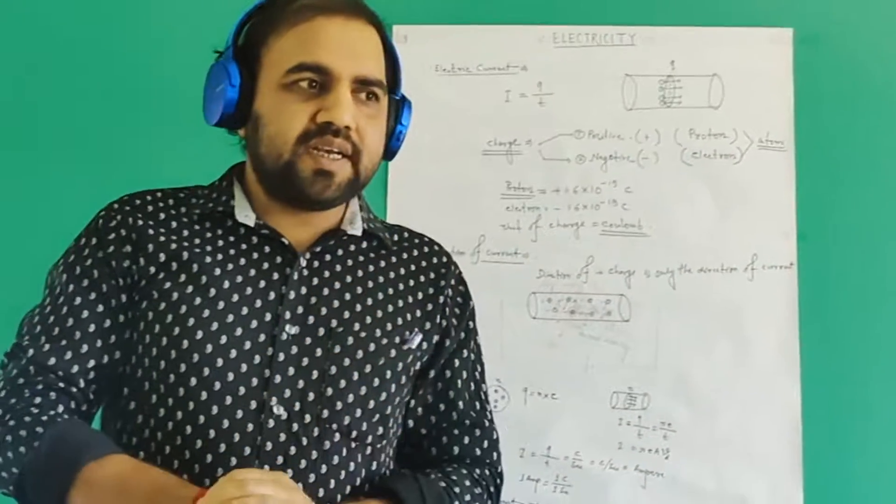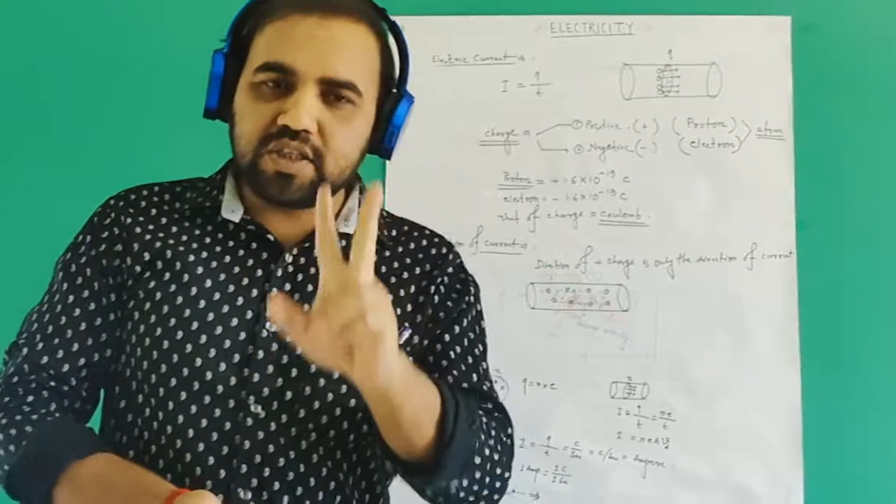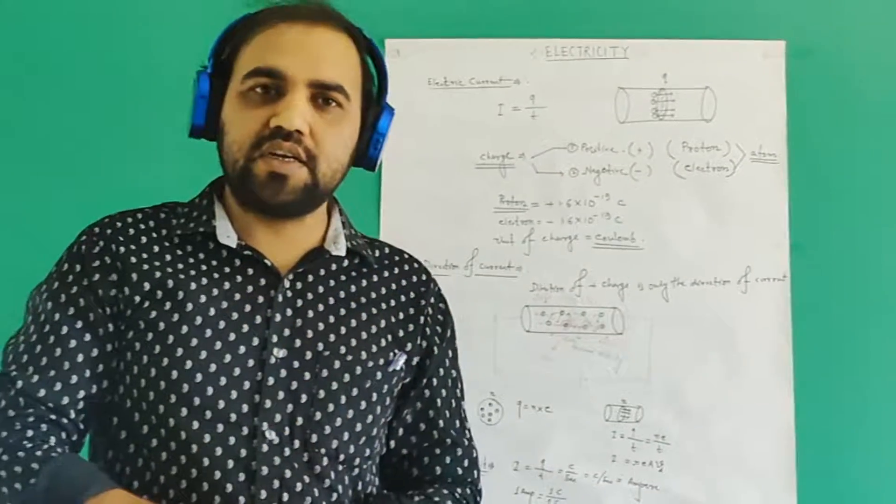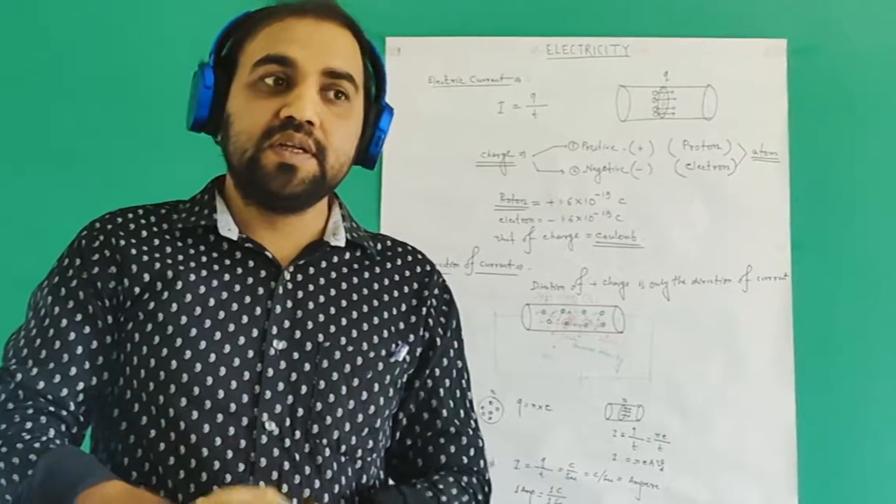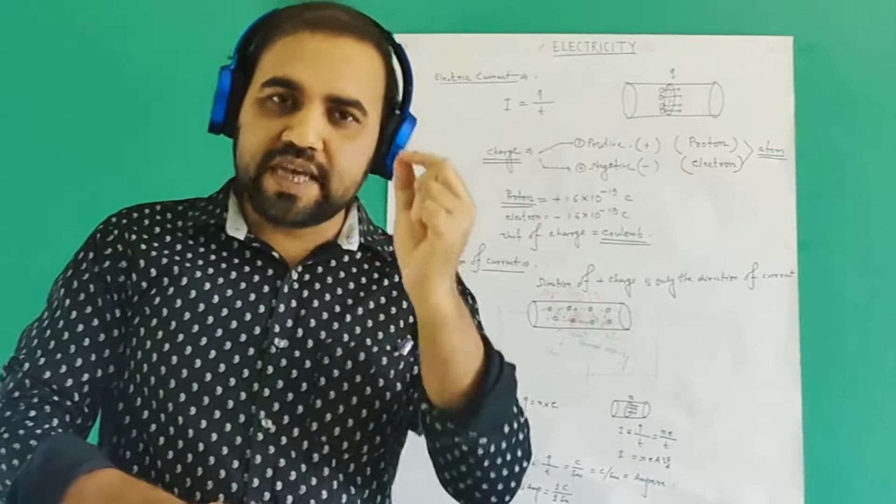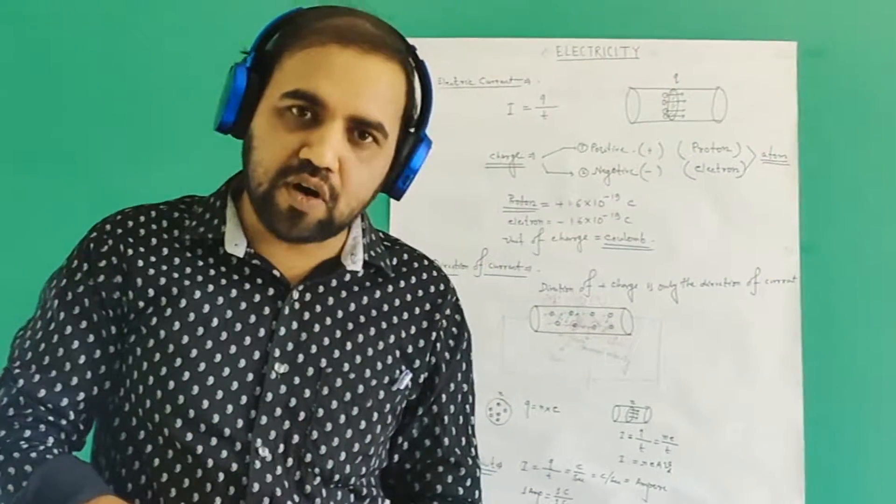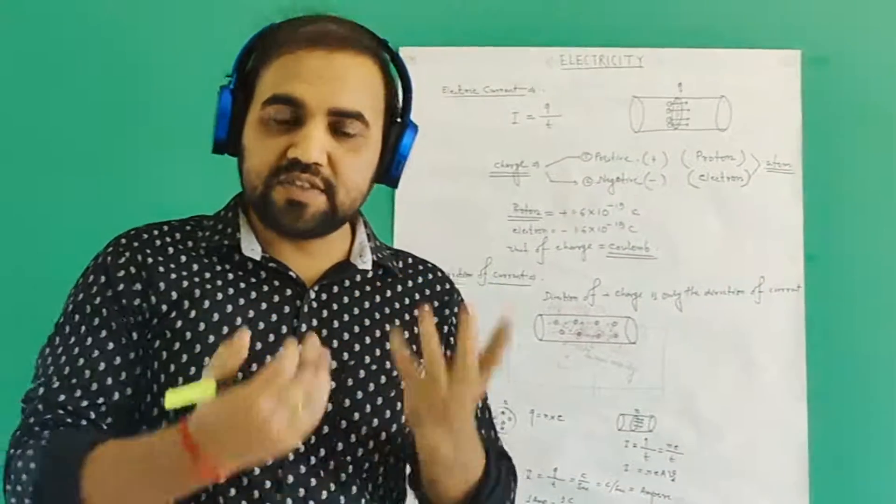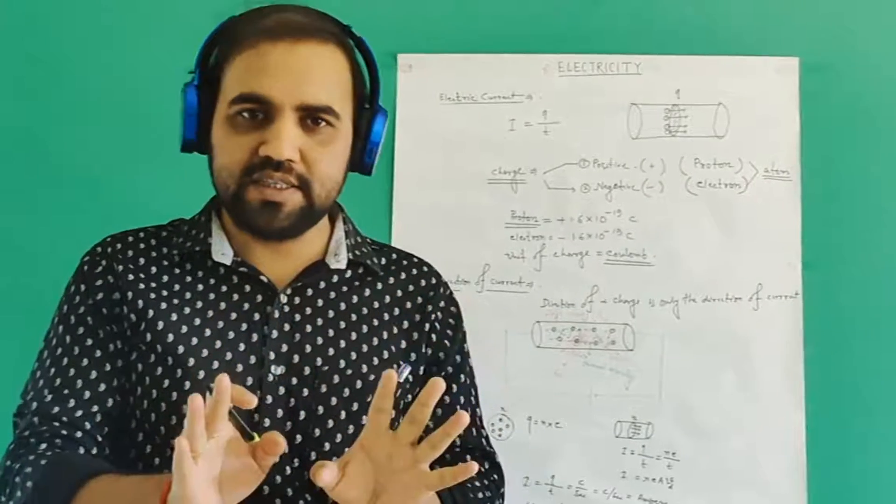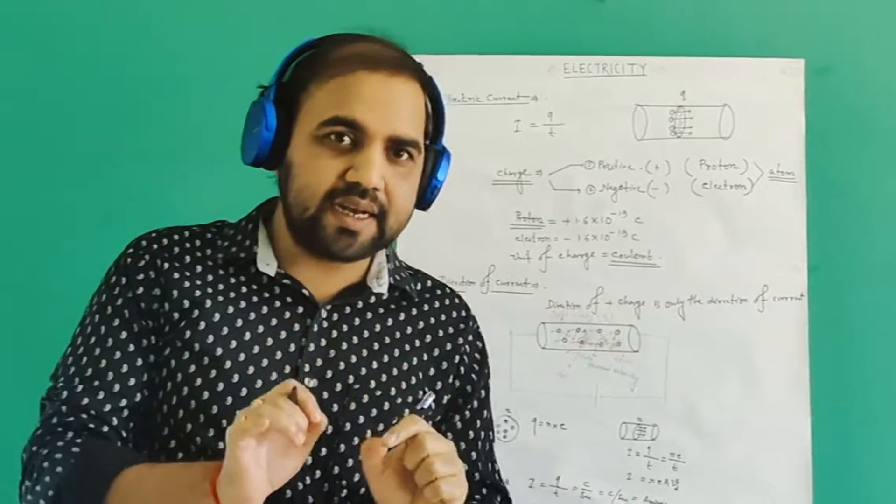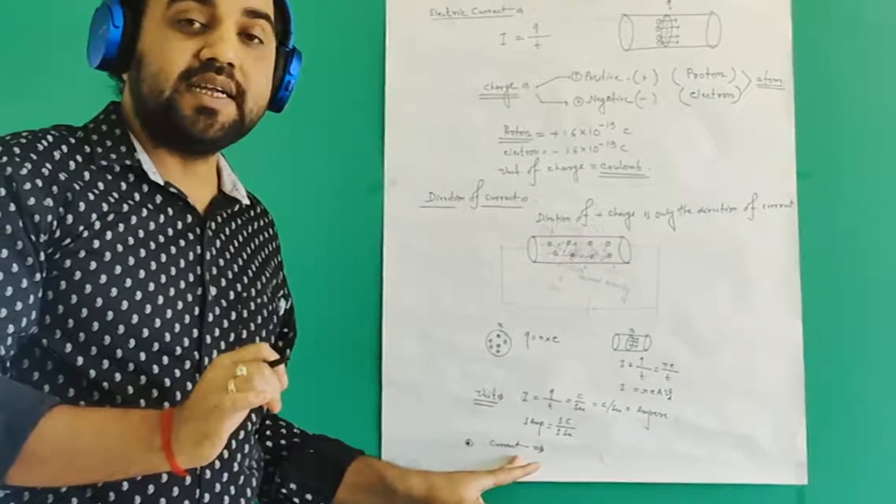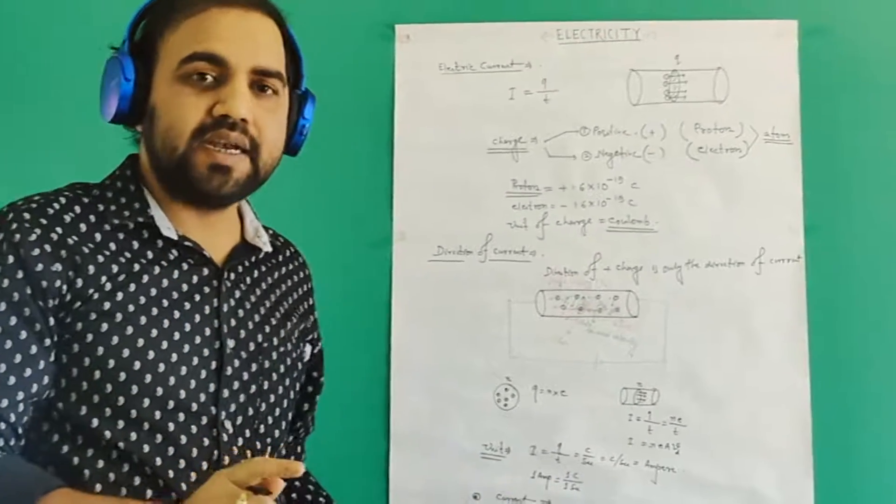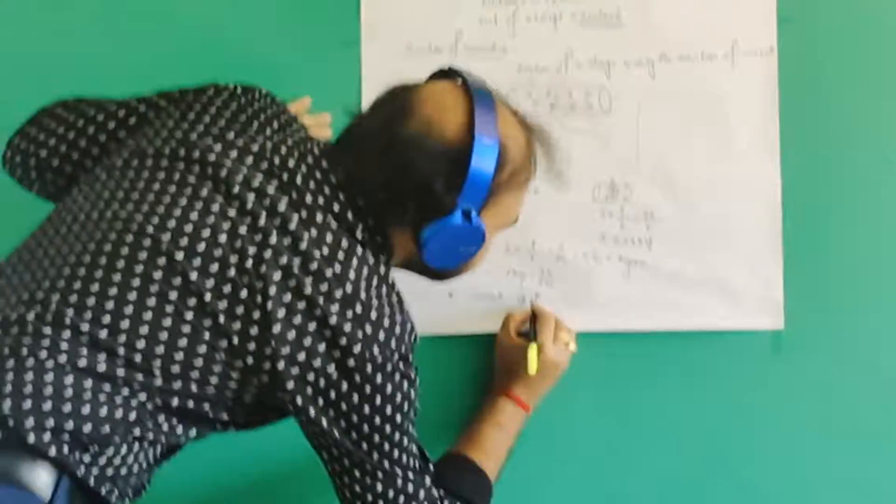To be a vector quantity, only these two criteria are not enough. Apart from that, there is a third criteria. The quantity which has both magnitude and direction and must follow vector algebra is a vector quantity. In class 11 you will learn these things, but remember that current does not follow vector algebra. That's why current is a scalar quantity.